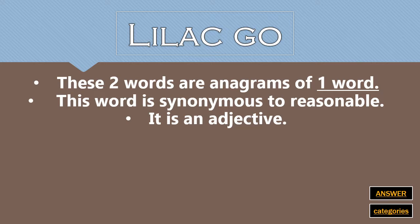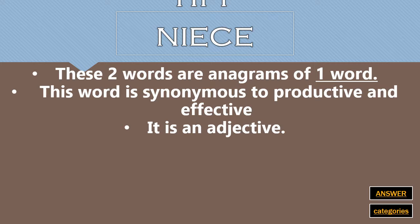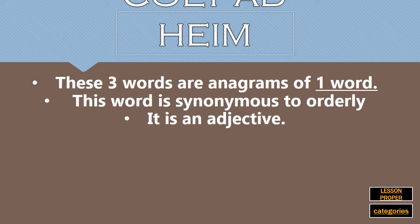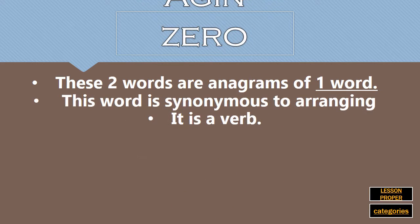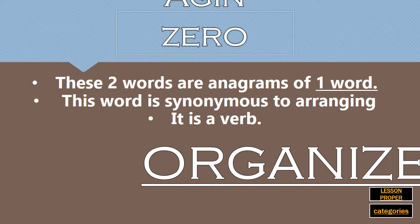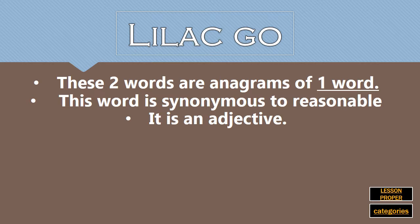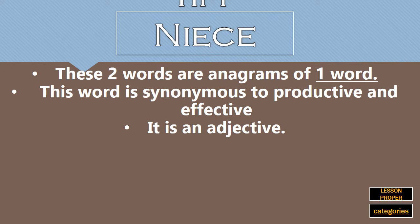Lilac, go — these two words are anagrams of one word. This word is synonymous to reasonable, and it is an adjective. What is the word? Tiff, niece — these two words are anagrams of one word. This word is synonymous to productive and effective, and it is an adjective. What is the word? The answers are: methodical, organized, logical, and efficient.